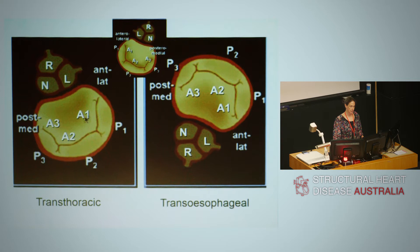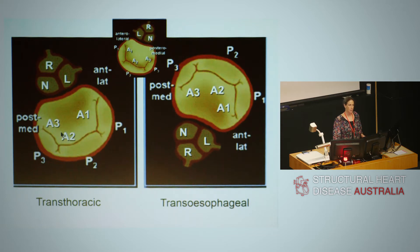This is a cartoon of what we were looking at with transthoracic imaging. With transesophageal imaging, the orientation is inverted relative to transthoracic — your posterior leaflet is at the top, but post-remedial is still on the left side. When we use the 3D TOE imaging in the surgical view, it's similar to transthoracic — anterior is at the top of the screen, but the lateral aspect is on the left-hand side.